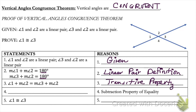Going from line three to line four, the reason is the subtraction property. Looking at line three, the only thing in common on both the left and right sides is the measure of angle two. Since the measure of an angle is just a number, we can subtract it from both sides. Subtracting the measure of angle two from both sides leaves us with: the measure of angle one equals the measure of angle three — by the subtraction property.